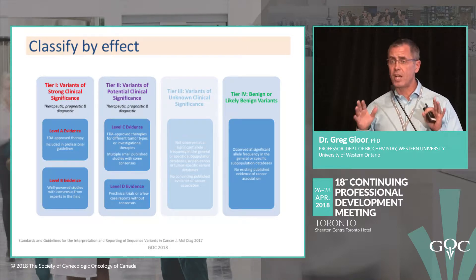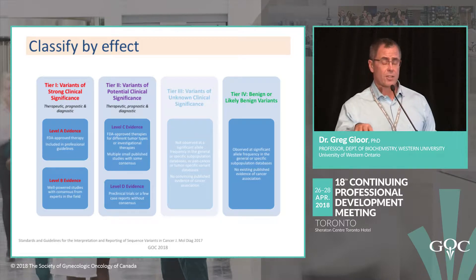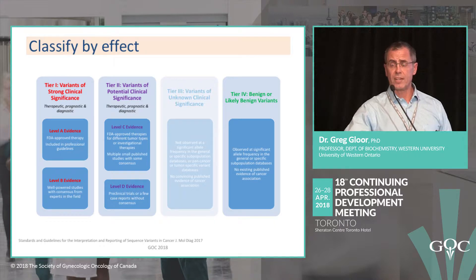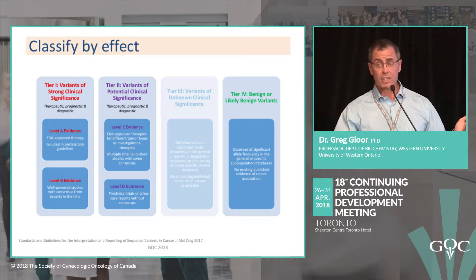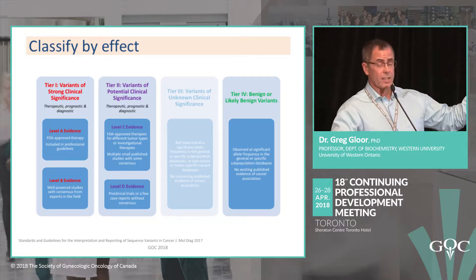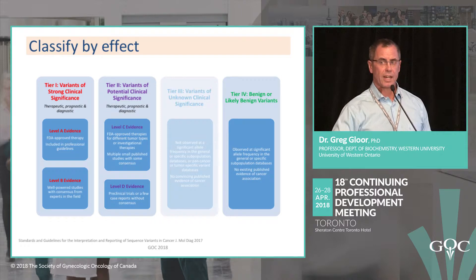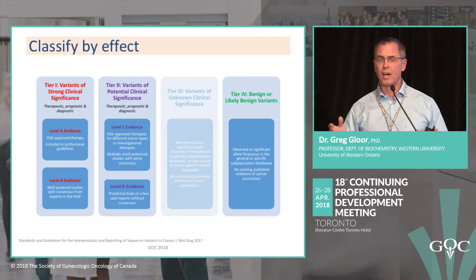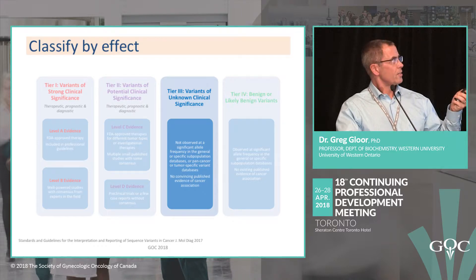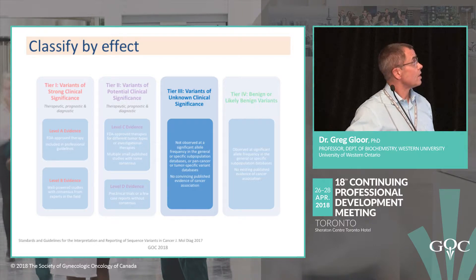Once you have your variants, you classify them by effect using these databases. There are basically four tiers. Tier 1 variants: you see that variant, you know what the treatment plan is. Tier 2 variants: there's at least something in mice or a different tumor type that might work. Tier 4 variants: seen in the general healthy population — you don't care. Tier 3 variants are interesting: they're not in databases and not benign, private to the tumor, and ovarian cancers especially have many private mutations. For these we use prediction tools — and you should never use these prediction tools clinically.